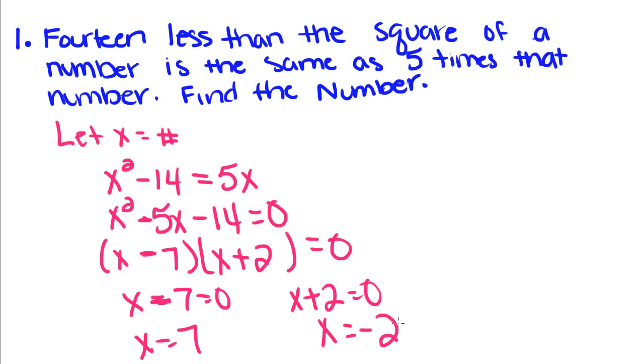So now what we do is plug both of these numbers in and see which one makes the statement true. So 7 squared minus 14 equals 5 times 7. 7 squared is 49 minus 14 equals 35. If you subtract that, you get 35 equals 35. So that one checks out.